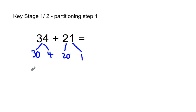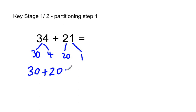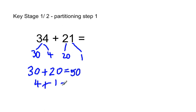We then add our tens numbers, so 30 plus 20 equals 50. Then we find the total of our units, so 4 plus 1 equals 5.